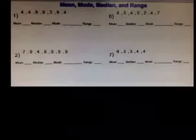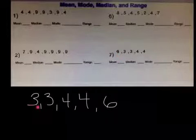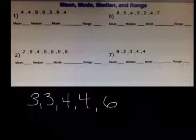To find the median we have to take all the numbers and put them in order from lowest to highest. For example, as you can see, I've organized them: 3, 3, 4, 4, 6. I've organized them from lowest to highest.